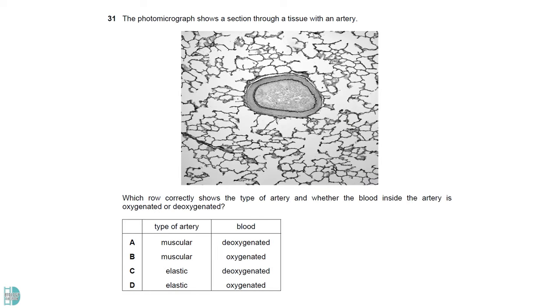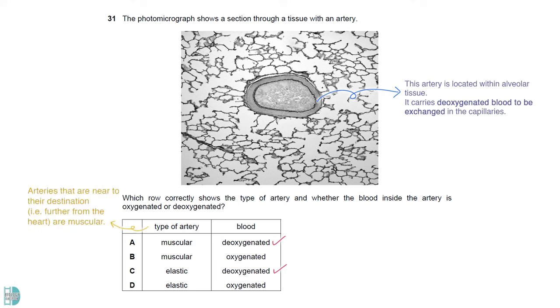This artery is located within alveolar tissue. It carries deoxygenated blood to be exchanged in the capillaries. Arteries that are near to their destination are muscular rather than elastic.